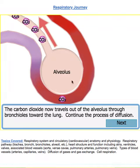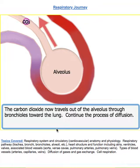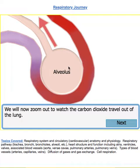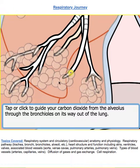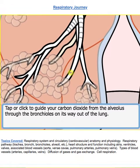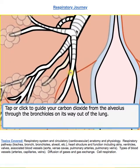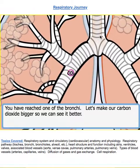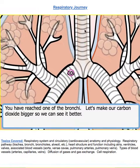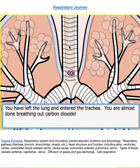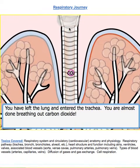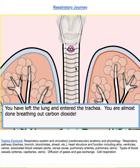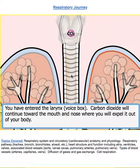The deoxygenated blood returns to the lungs, and the carbon dioxide diffuses right out to the alveoli. The carbon dioxide travels out of the grape-like alveoli structure, goes through the bronchial tubes, out the trachea, out the larynx and pharynx, and out into the atmosphere. So when we exhale, we breathe out carbon dioxide.